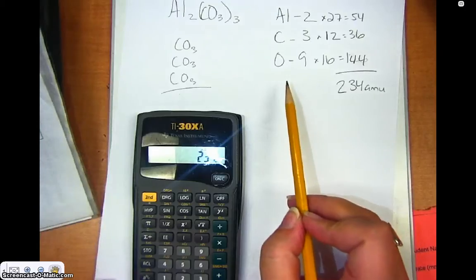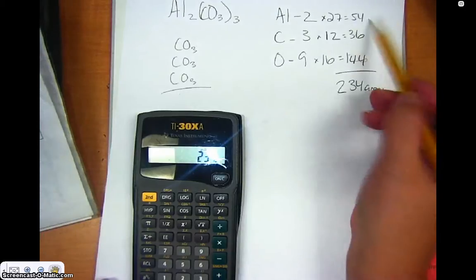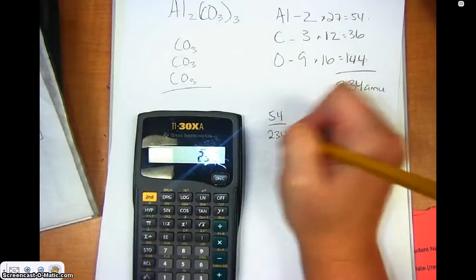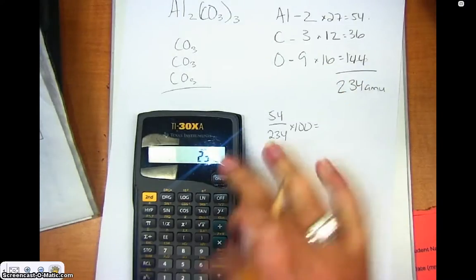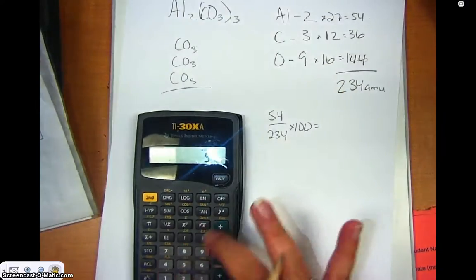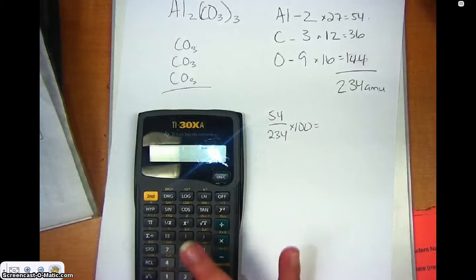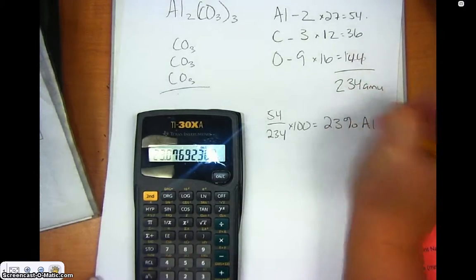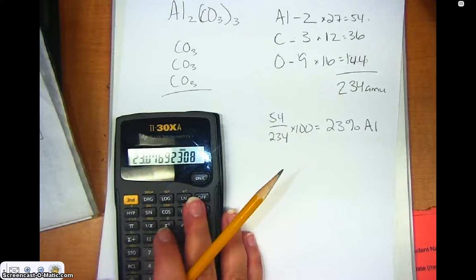Now, if I want to know the percent that was aluminum, I would just take part out of the whole. So, 54 out of 234 times 100. And I get 23%. And then, I could do that for the other elements as well.